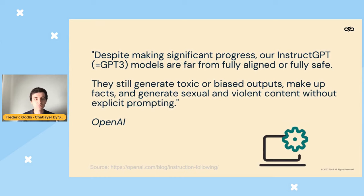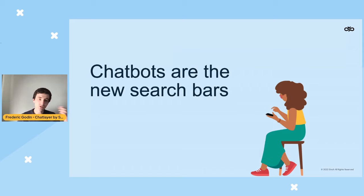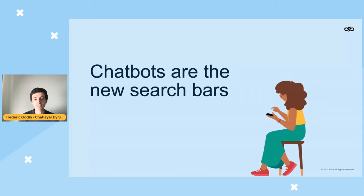OpenAI acknowledges these limitations: despite high conversation quality, there's still a chance of toxic or biased outputs, and GPT-3 can make up facts. I believe chatbots are the new search bars — they should work with external knowledge and back-end APIs. What you really want is to go to a website, ask a question, and have the chatbot retrieve the answer by searching the site.